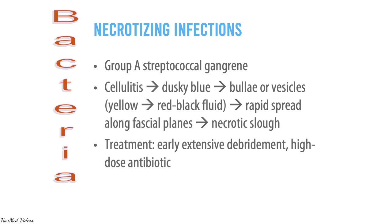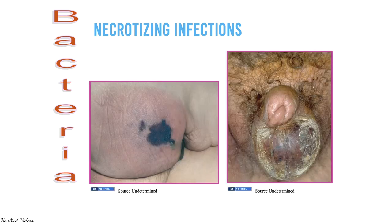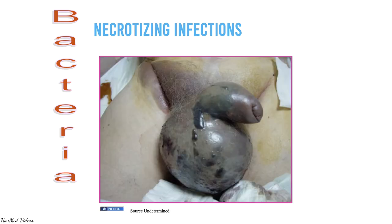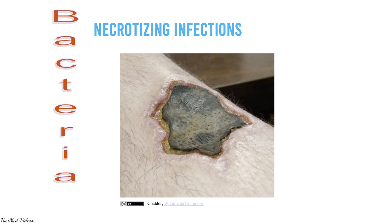Necrotizing infection is a real emergency. It's caused by Group A streptococcal gangrene; group cellulitis causes dusky blue skin with bullae or vesicles that spread rapidly along fascial planes, causing necrotic slough. Treatment is early debridement and high-dose antibiotics. This is an extremely severe condition — the skin becomes completely necrosed and black.